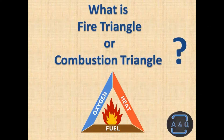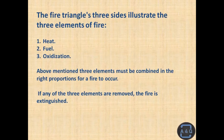What is the fire triangle, or combustion triangle? The fire triangle's three sides illustrate the three elements of fire: one, heat; two, fuel; three, oxidization. The above-mentioned three elements must be combined in the right proportions for a fire to occur.